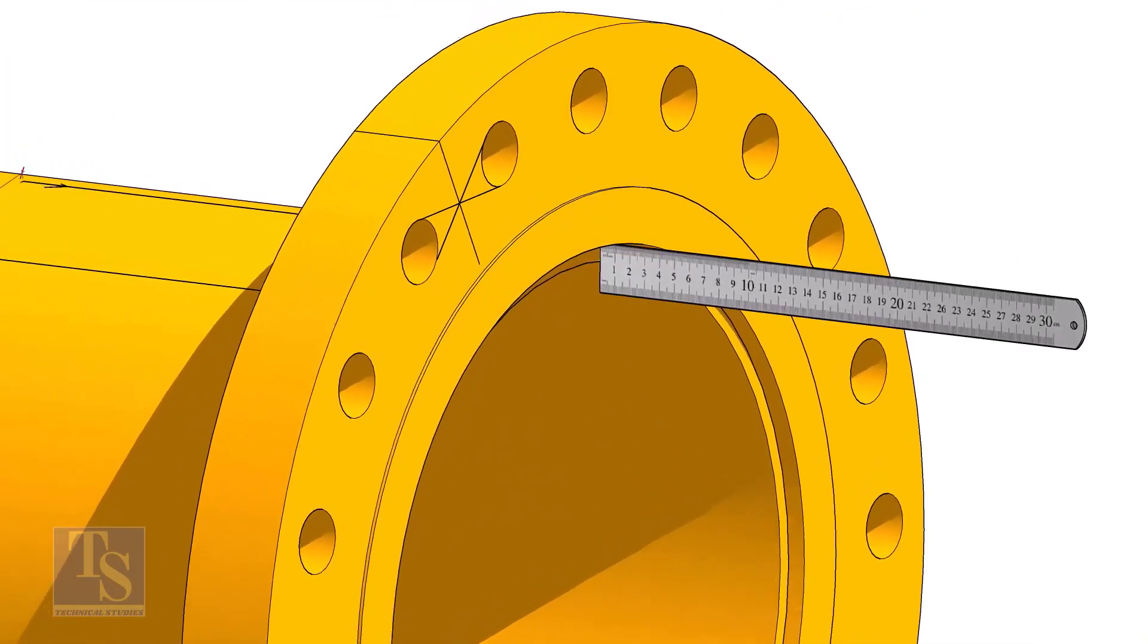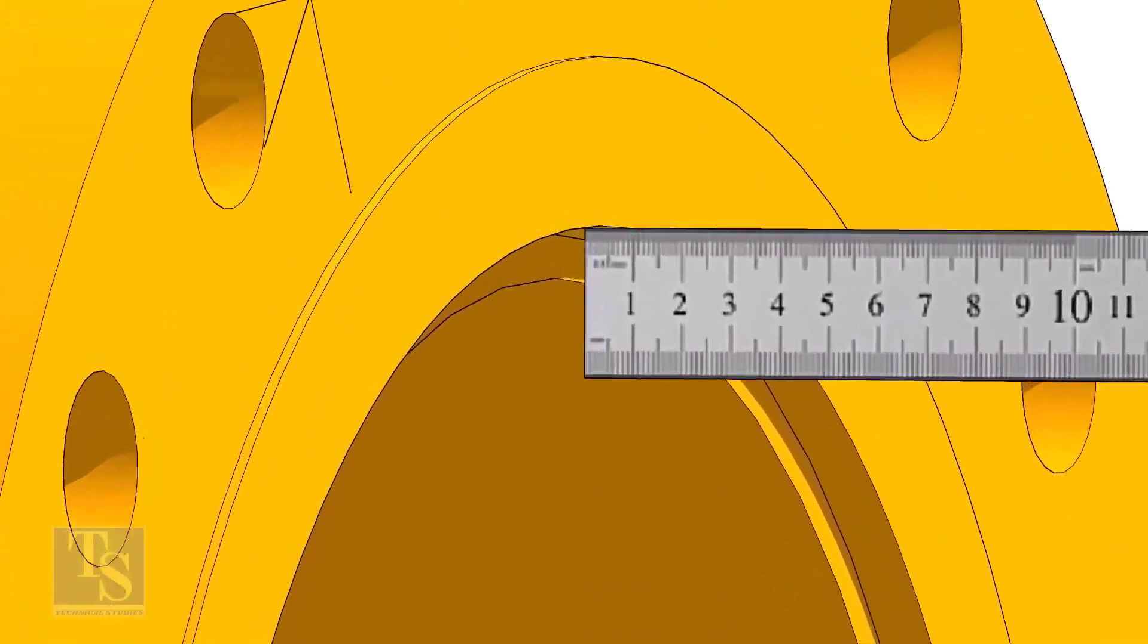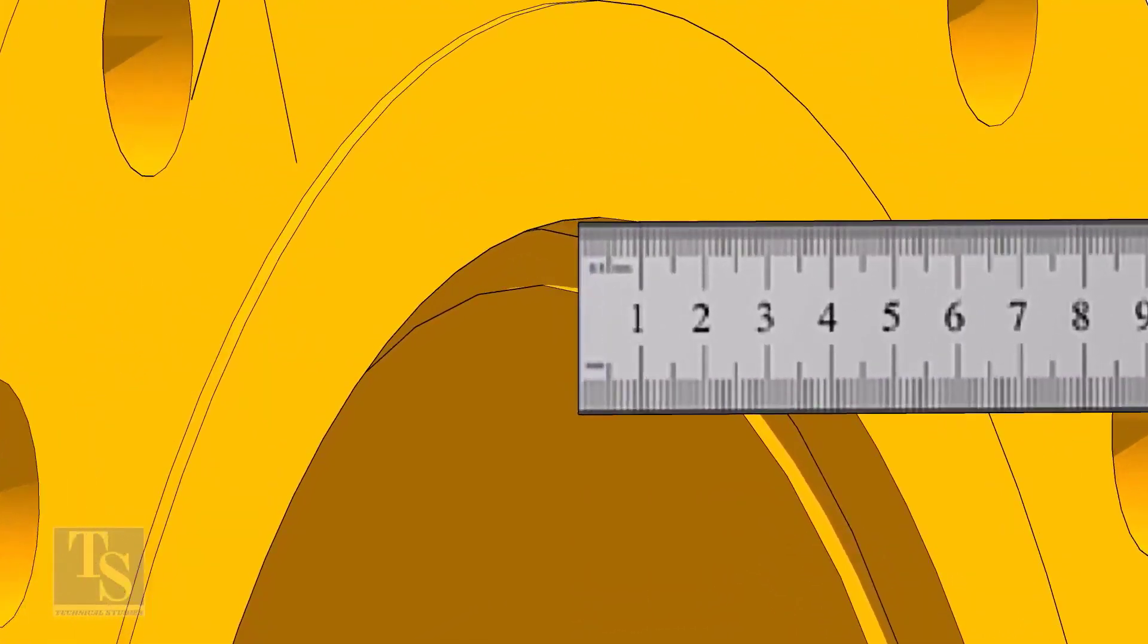Fix the distance between the flange face and the pipe face. Usually, this measurement is equal to the thickness of the pipe.